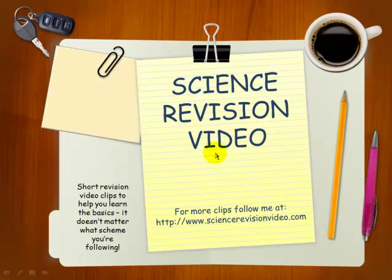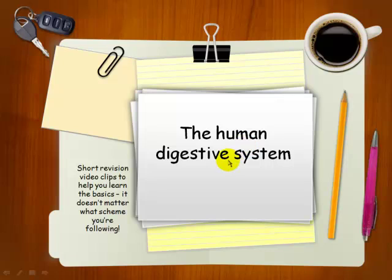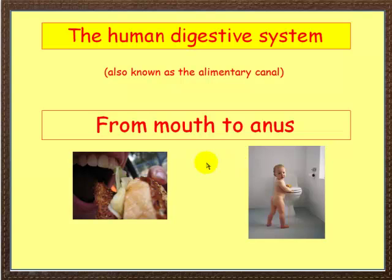Hello and welcome to another Science Division video. In this video we're going to take a very rapid tour through the human digestive system. The human digestive system is also known as the Alimentary Canal.